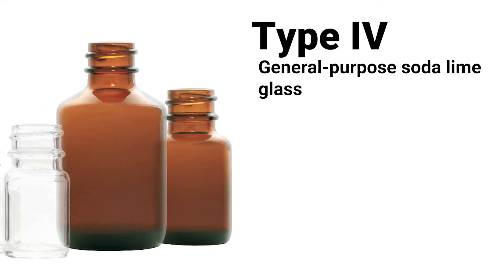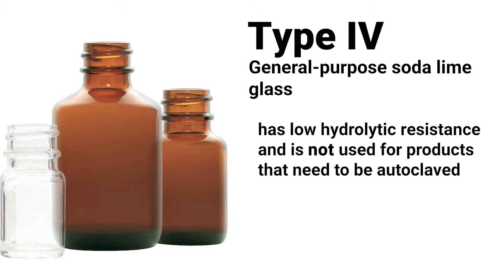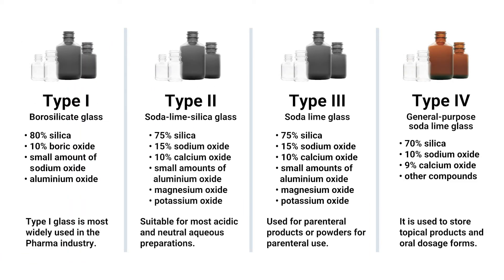Type 4 glass containers — general-purpose soda-lime glass — has low hydraulic resistance and is not used for products that need to be autoclaved, as it will increase the erosion reaction rate of the glass container. It is used to store topical products and oral dosage forms.